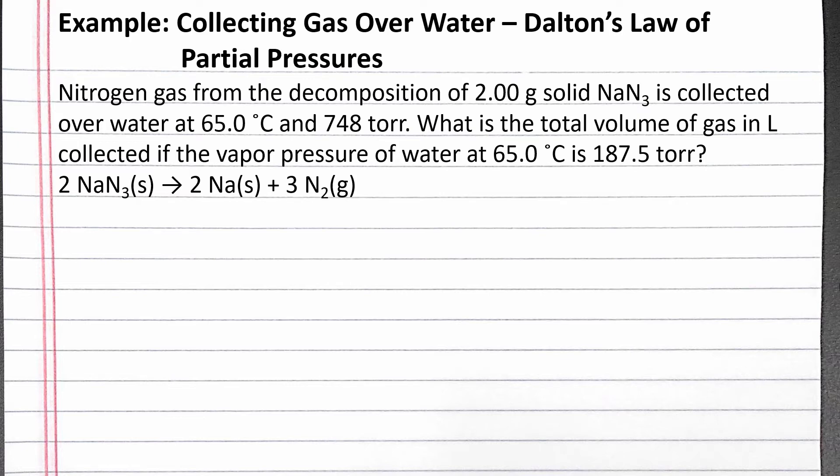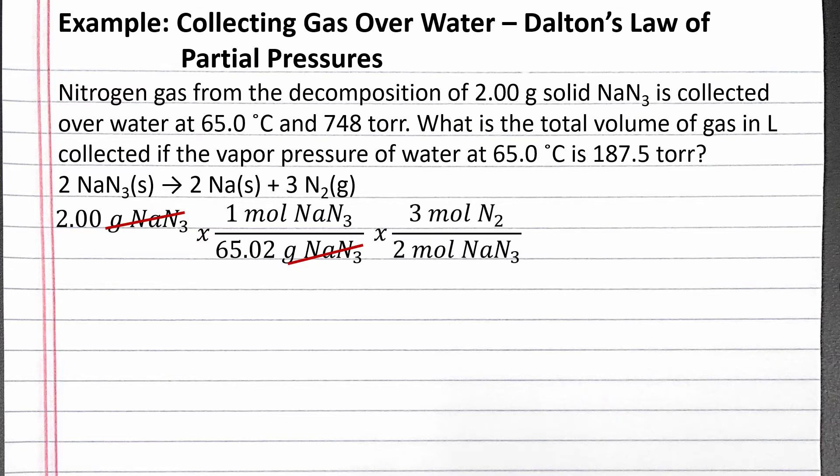To find the moles of nitrogen gas, we can use dimensional analysis to convert 2.00 grams sodium azide into moles nitrogen gas. We can use the molar mass of sodium azide to convert from grams to moles of sodium azide. Then we can use the coefficients in the balanced chemical equation to convert from moles sodium azide to moles nitrogen gas.